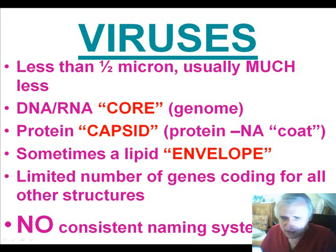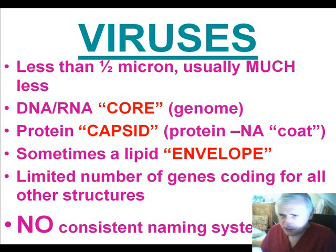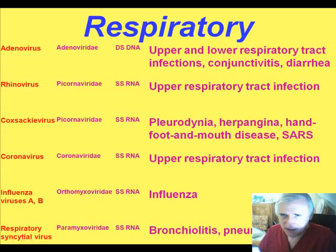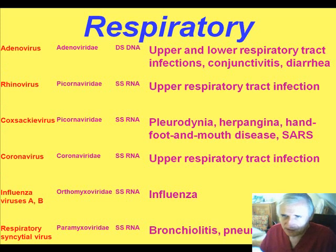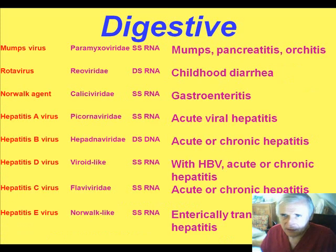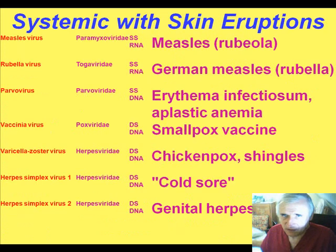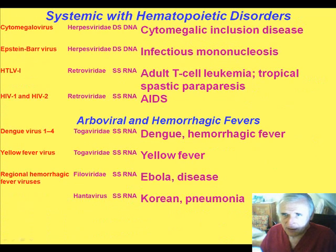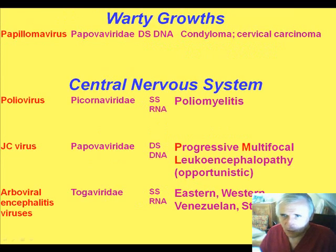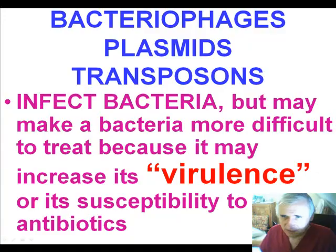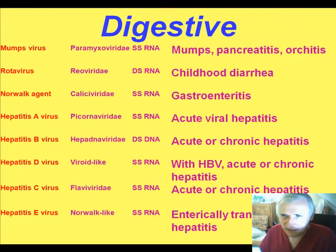There is no consistent naming system for viruses, and the current system is generally not logical. So practically speaking in pathology, the best way to classify viruses is by system — respiratory viruses, digestive viruses, skin eruptions, hematologic viral disorders, arboviruses and hemorrhagic fevers, warty viruses, and central nervous system viruses. Those are the common classifications.